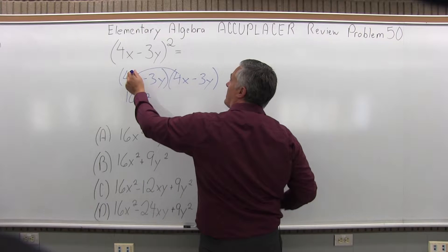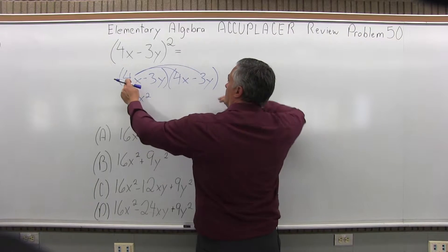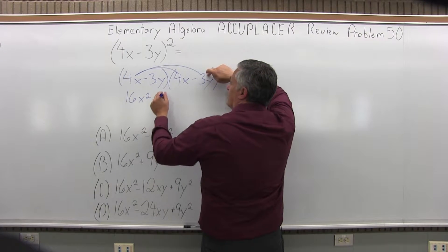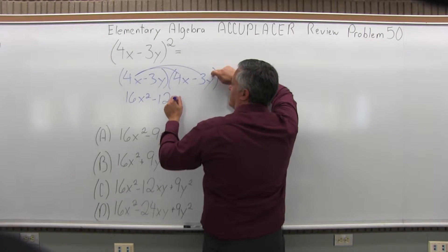Next, 4x times minus 3y. So the 4 times the minus 3 will be negative 12. x times y is xy.